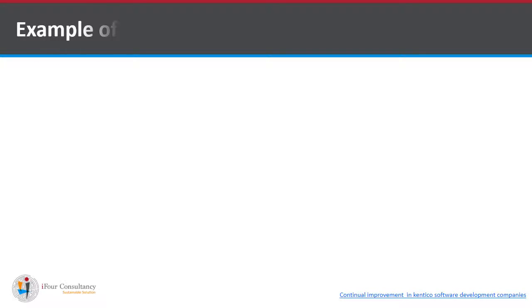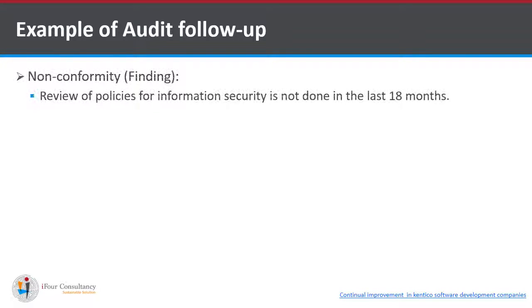Let me explain audit follow-up with an example. Every organization should review their information security policy at planned intervals — whether monthly, half-yearly, or yearly. In this example, a non-conformity or negative audit finding is raised because the review of policies for information security was not done in the last 18 months.